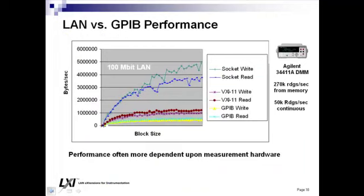When you have LAN-based instruments, you have the added advantage of transferring large blocks of data very quickly. Performance is often more dependent upon the measurement hardware, and in many cases LAN-based instruments operate at exactly the same speed as GPIB instruments because they're limited by the hardware's measurement performance. However, with this particular voltmeter, it can take 50,000 readings per second continuously, store those readings in memory, and acquire them almost six times faster — something not achievable with GPIB but achievable with LAN-based instruments.